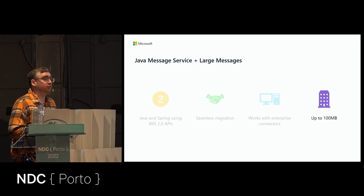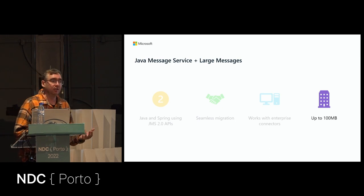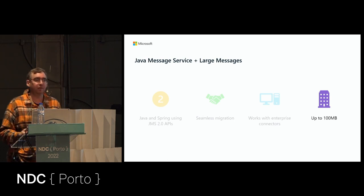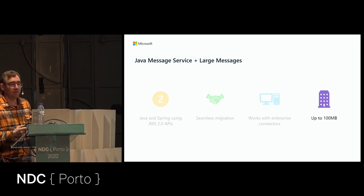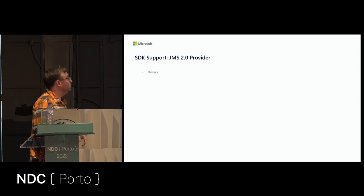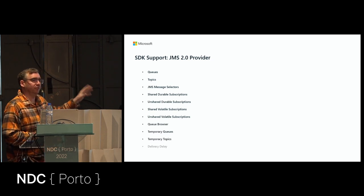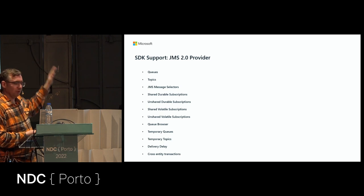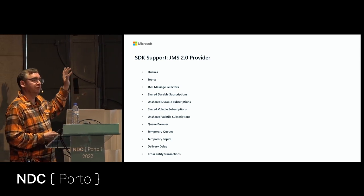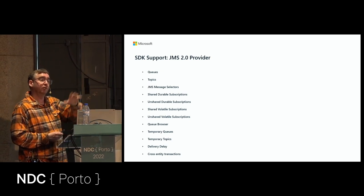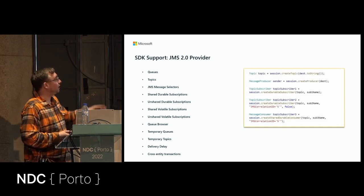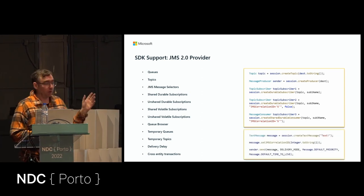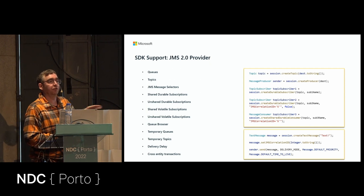We support up to 100 megabytes because we know that a lot of these workloads have larger messages. We do think 100 megabytes is a lot for a message, but if you need those large messages we support them. We support about 95% of the JMS 2.0 feature set — there are one or two features still in progress that will bring us to 100% compliance. There's no need for any code changes when migrating from ActiveMQ or IBM MQ — nothing has to change in your actual code except your configuration.